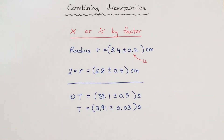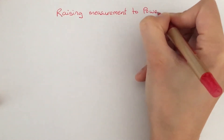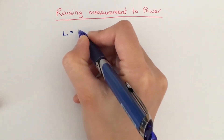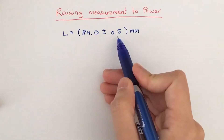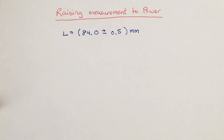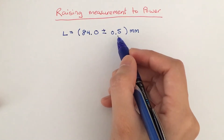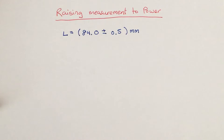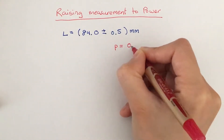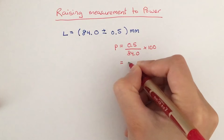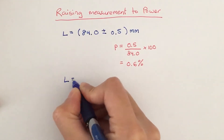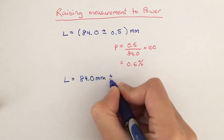Now let's look at what we need to do when we raise a measurement to a certain power. We have measured length to be 84.0 millimeters, and it has an absolute uncertainty of 0.5 millimeter. When we raise it to a power, there's nothing we can do directly to the absolute uncertainty. What we have to do first is convert that into a percentage uncertainty. In this example, the percentage uncertainty is found by doing 0.5 divided by 84 times by 100, which gives 0.6%. We write length L as 84.0 millimeters plus or minus 0.6%.